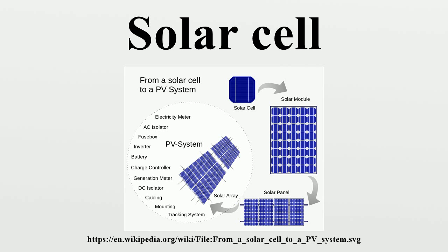Multiple solar cells in an integrated group, all oriented in one plane, constitute a solar photovoltaic panel or solar photovoltaic module. Photovoltaic modules often have a sheet of glass on the sun-facing side, allowing light to pass while protecting the semiconductor wafers. Solar cells are usually connected in series in modules, creating an additive voltage. Connecting cells in parallel yields a higher current.